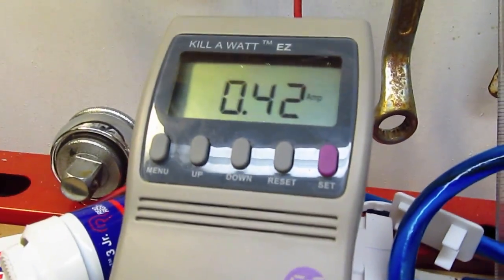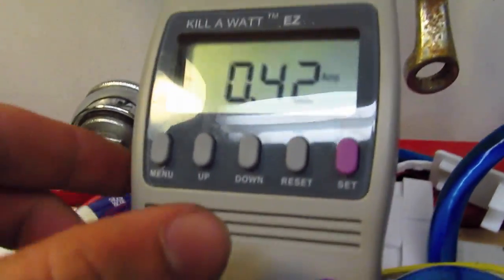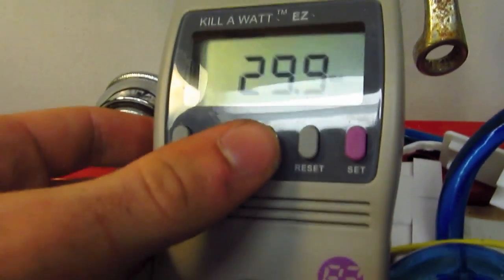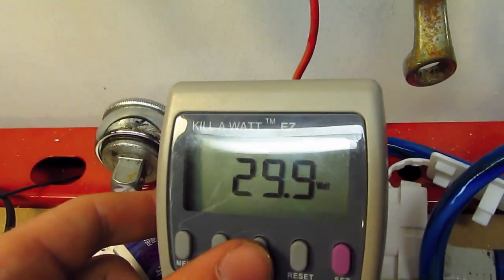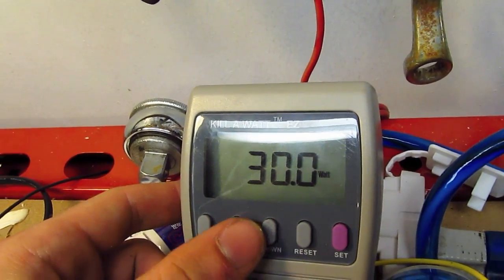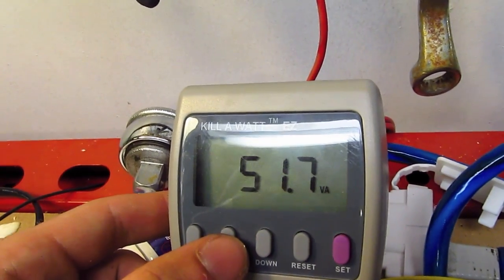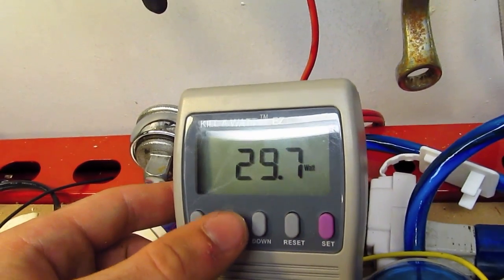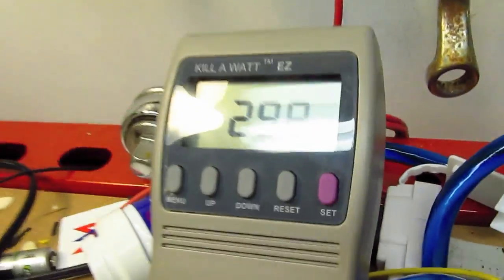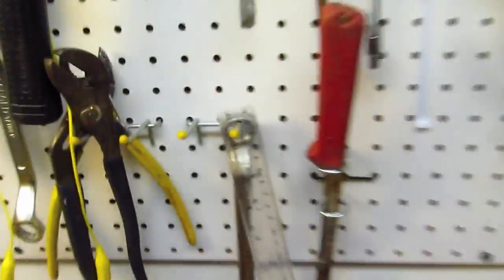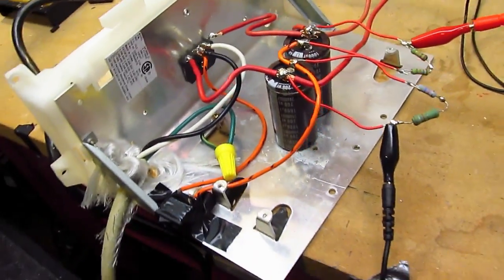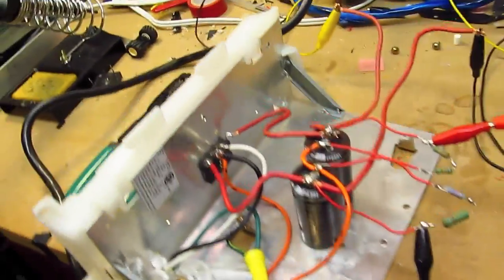We're pulling 0.42 amps from the mains. 51 volt amps, but a little under 30 watts. The circuit doesn't seem to be complaining.